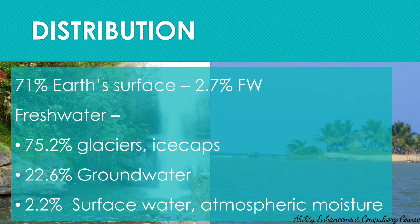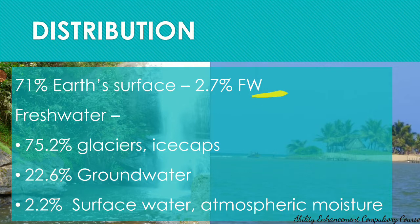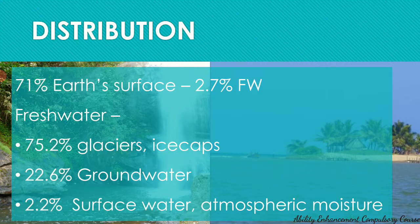On the earth surface, 71 percent — that is almost three-fourths — is covered in water. However most of it is salty ocean water, and it is only 2.7 percent which is fresh water available for use. Even amongst this 2.7 percent, 75 percent is locked in the form of glaciers and ice caps on the mountains, found in the Antarctic or Arctic region, with roughly around 5 percent in mountain ice caps.